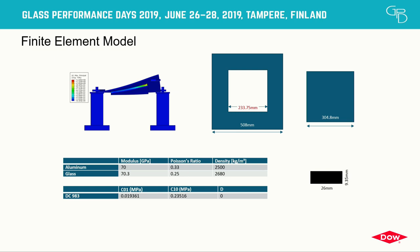Aluminum and glass have a modulus of around 70 gigapascals. We used a Mooney-Rivlin 2-parameter model for the sealant, which was a two-part sealant. The plate dimensions were 500 millimeters square, the cutout was around 233 millimeters, and our bite was 26 millimeters by 9.35 millimeters.